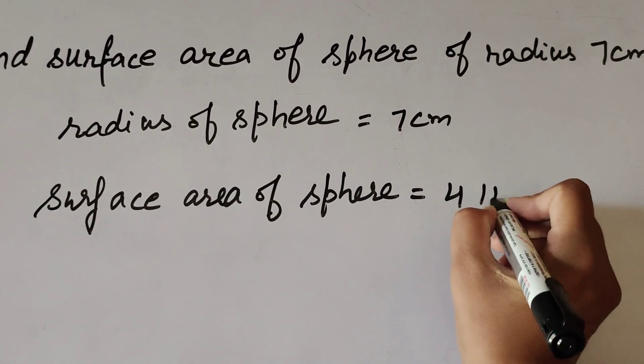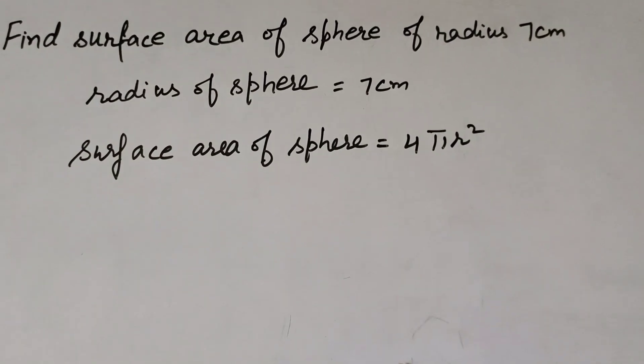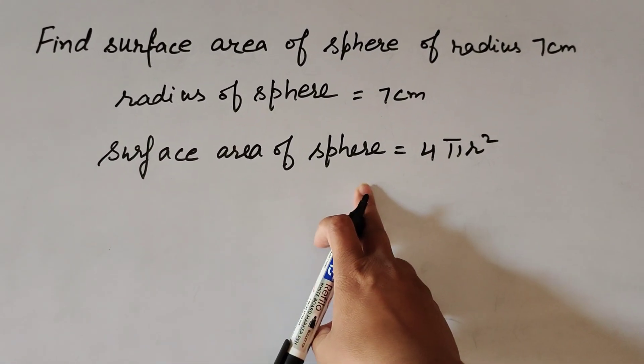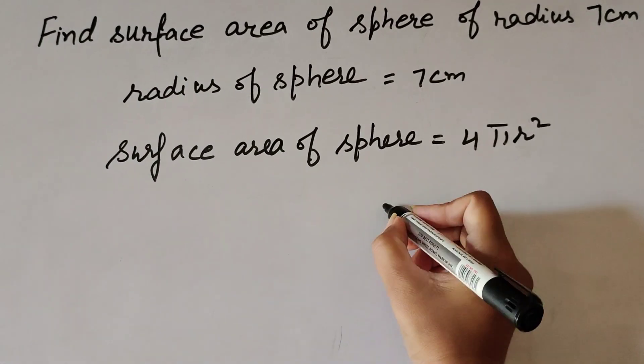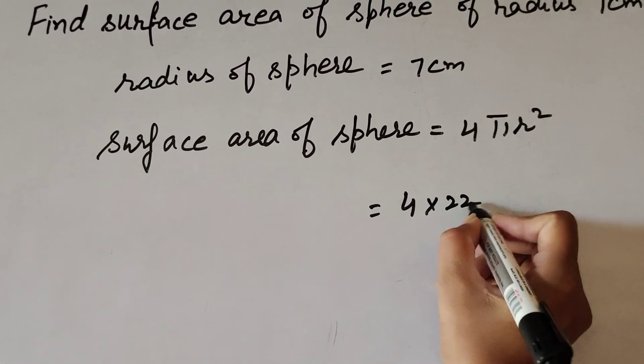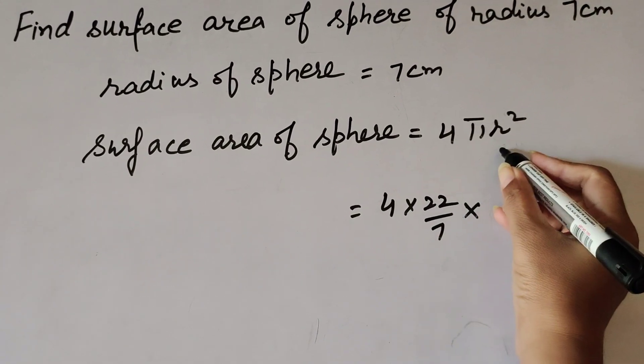It is equal to 4πr². This is the formula that we use to find the surface area of sphere. It is equal to 4, there is π, its value is constant 22 over 7, multiply r² where r is radius.